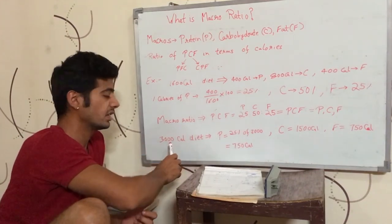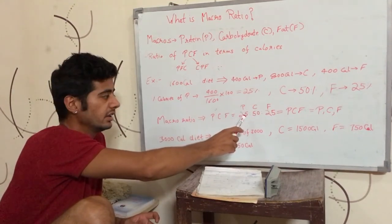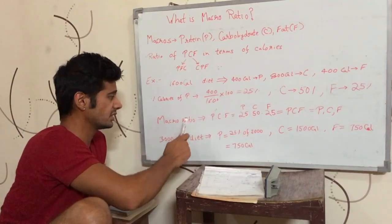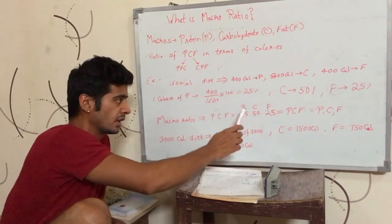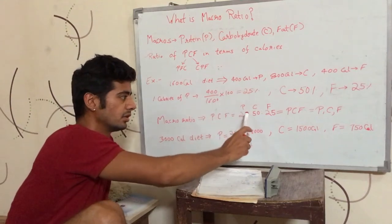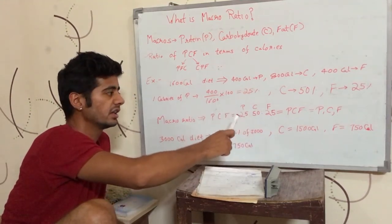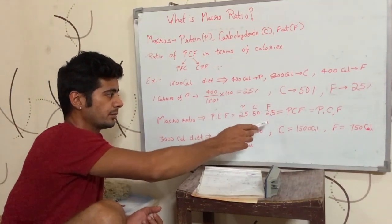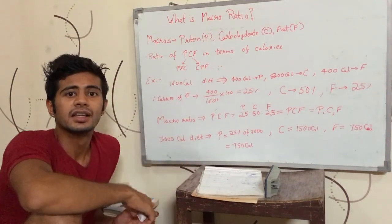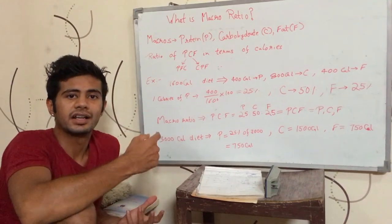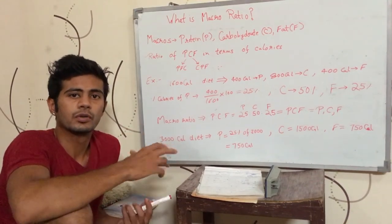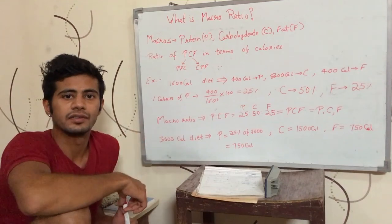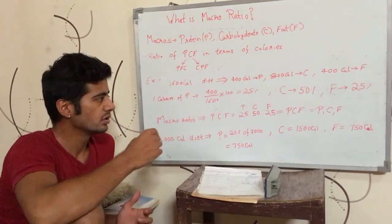The PCF ratio works for any calorie amount. In 3000 calories, the macro ratio can be made for 1300 calories, 1600 calories, or 1500 calories. In every diet with different calorie amounts, there will be a ratio of macros, like 10% protein or 40% protein, 20% carbohydrate or 70%, fat 10% or 50%. In each case, there will be a macro ratio.